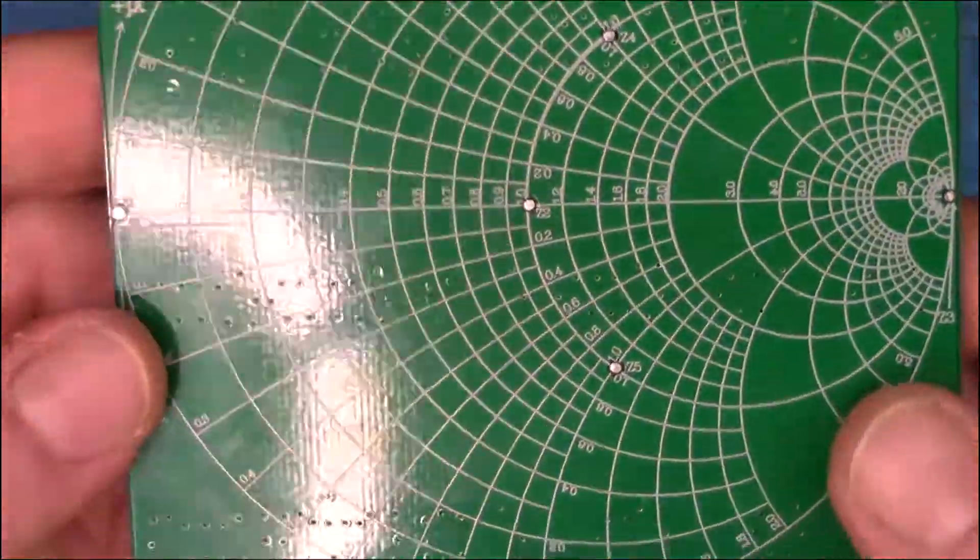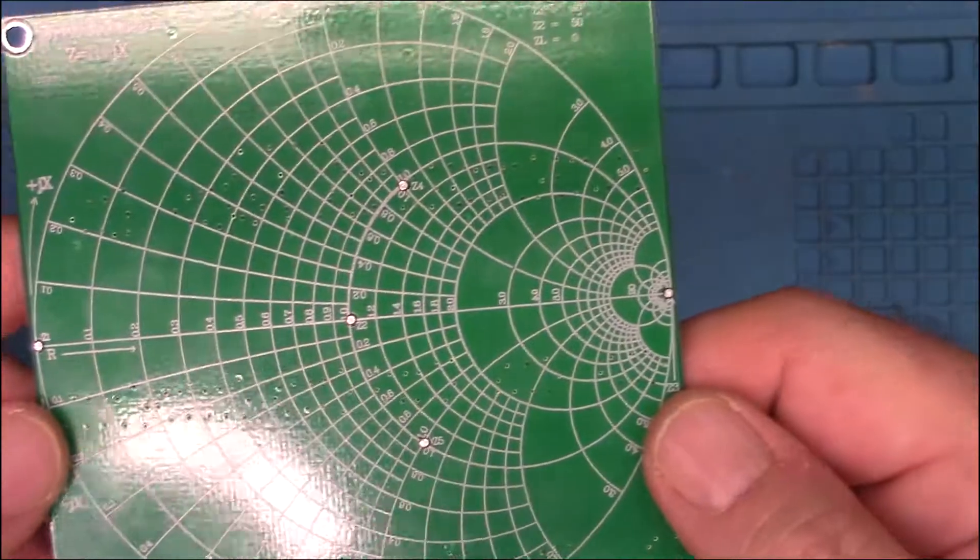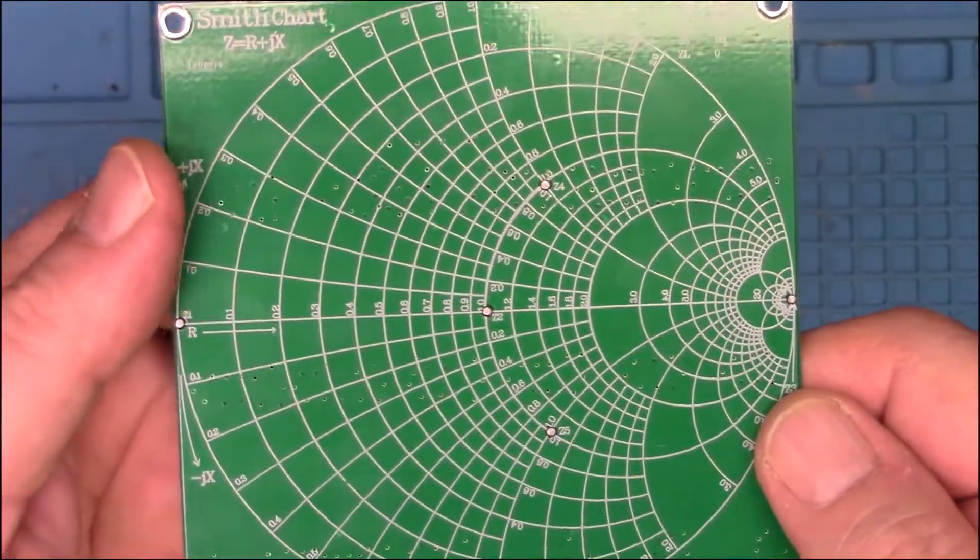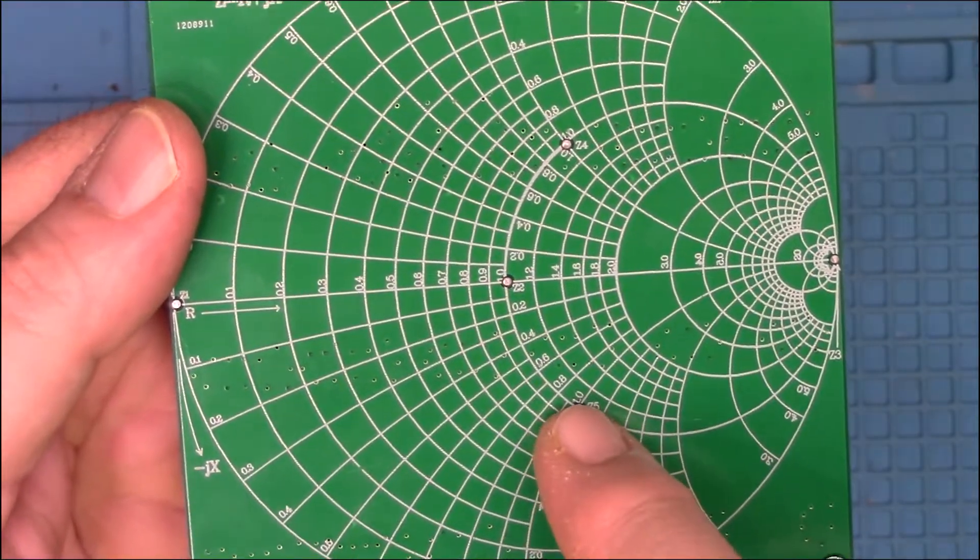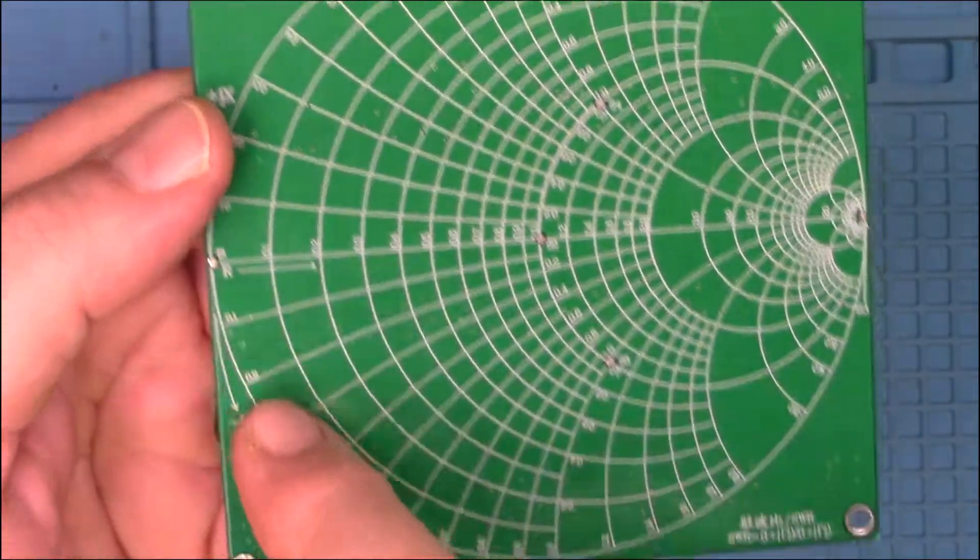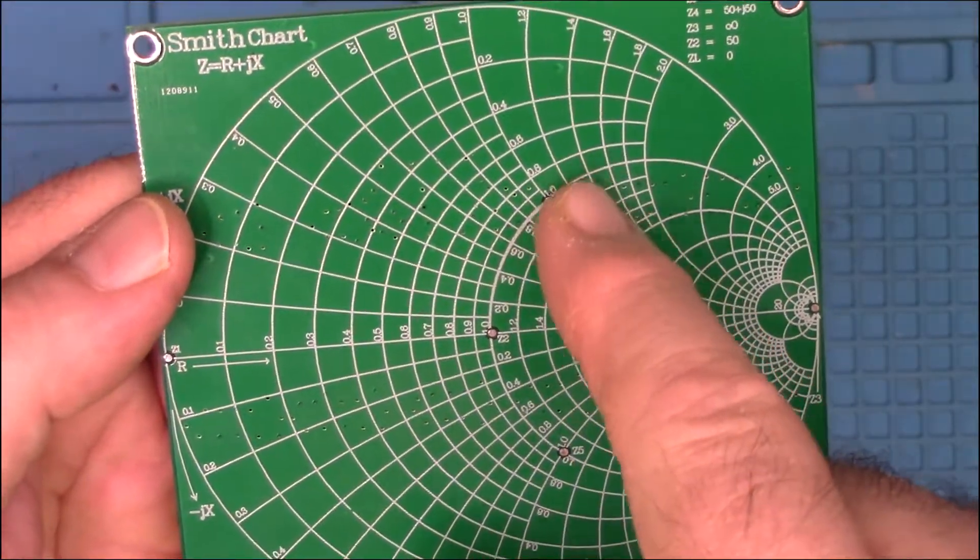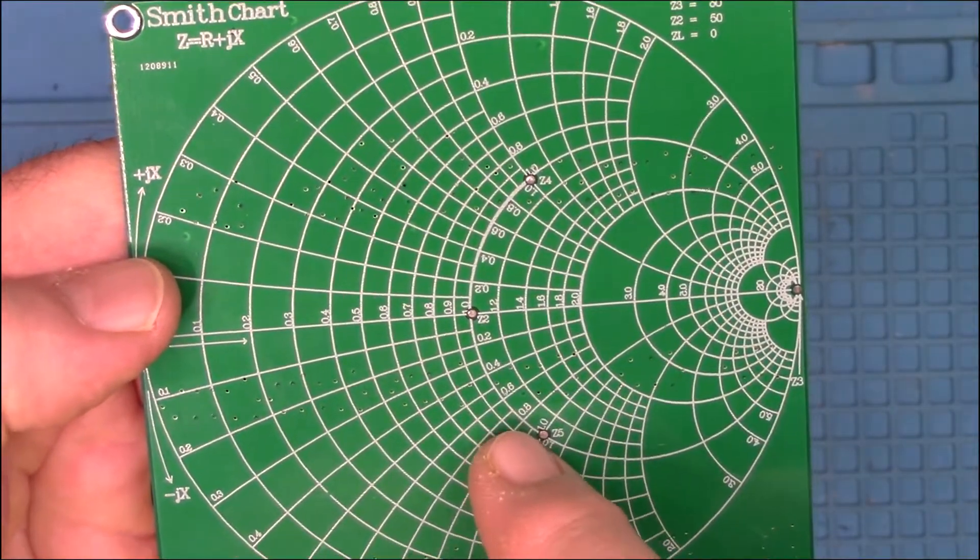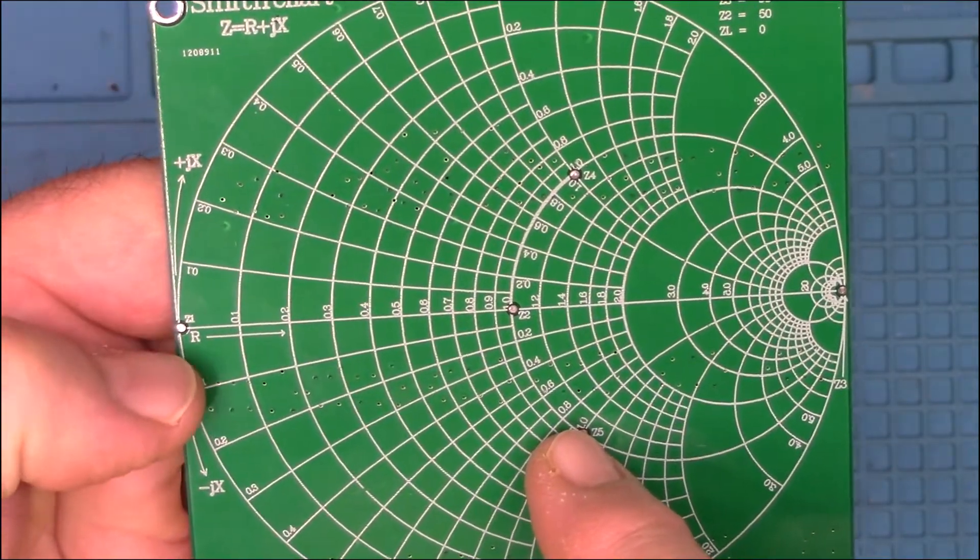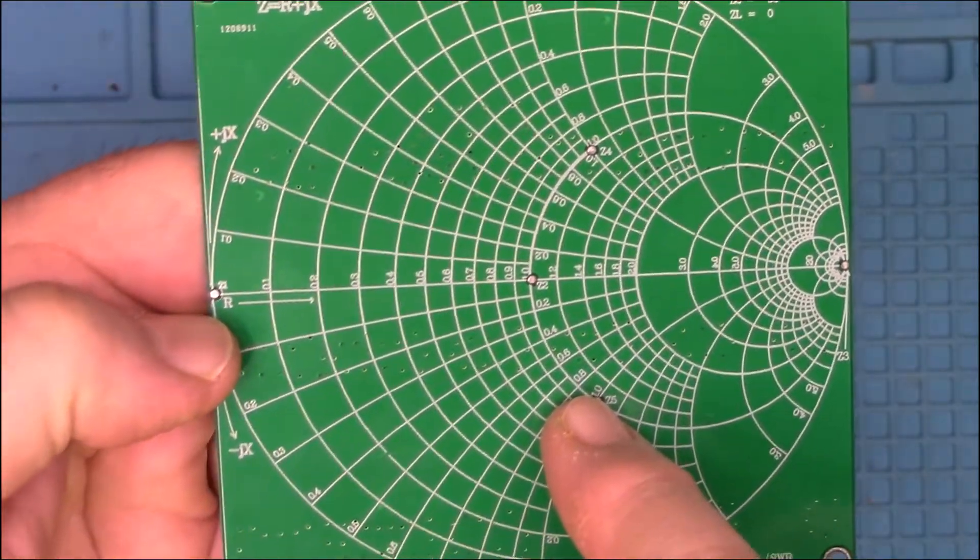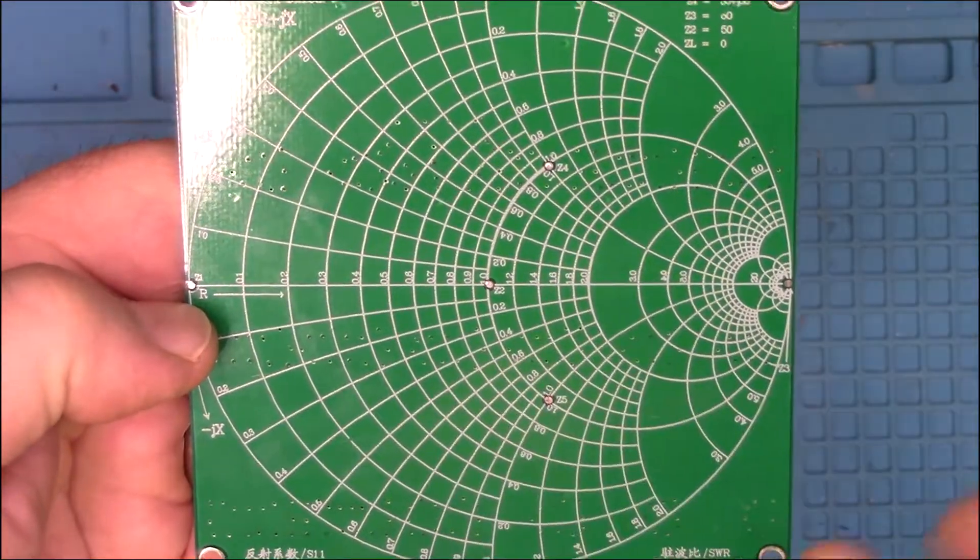And then on the back, we have a Smith chart here. And it looks like those are test points, all of those right there. So there's five of those points. And if I was better at reading Smith charts, I could tell you what those are. I'm sure a couple of you probably know. I'd have to Google this because I cannot read a Smith chart without documentation right next to me.